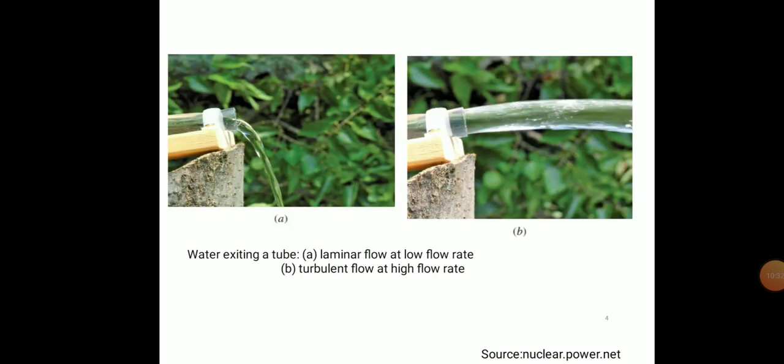Another example is water exiting a tube. In figure A the water flow rate is very low, which can be called laminar flow. In figure B the water flow rate is very high, which represents turbulent flow. When the discharge is very high, the velocity is always high, since Q equals A times V.